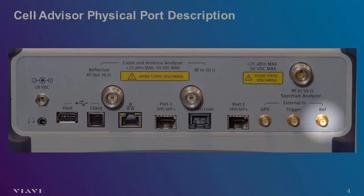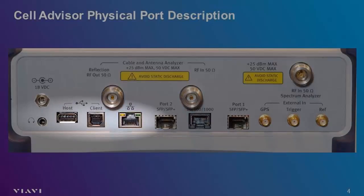The JD740 and JD780 Cell Advisors also have industry-standard USB and Ethernet ports. The USB port may be used for a variety of devices, including flash memory sticks, a Wi-Fi adapter, or the P5000i fiber inspection scope. The USB client port is used to directly connect a PC; however, the network port just to the right of the USB client port is generally used for this purpose. When connected to one of these ports, a PC can be used to remotely control the unit, collect a measurement, or transfer files.